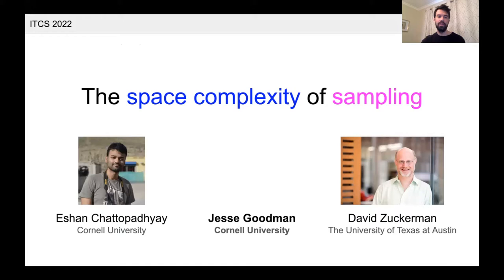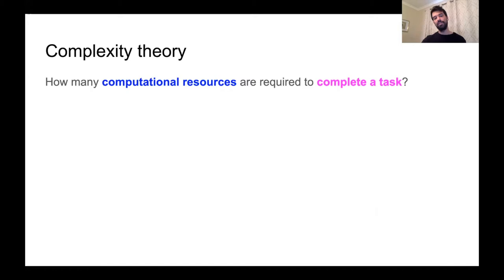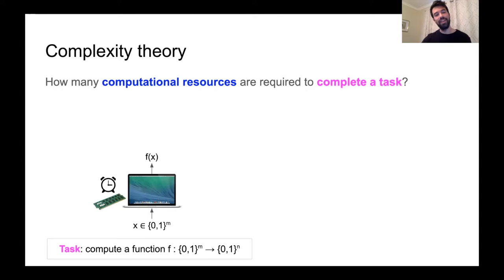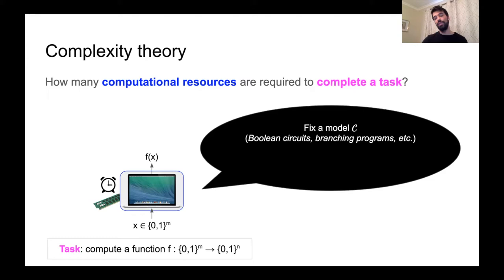Complexity theory asks the question: how many computational resources are required to complete a certain task? Traditionally, this task has been computing a Boolean function f, and traditionally, some computational resources that have been of particular interest are time and space.